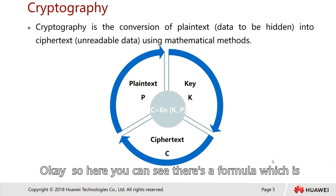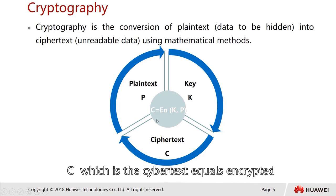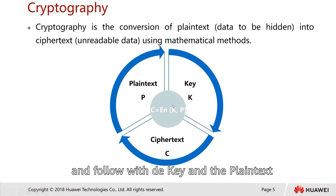Here you can see there's a formula: C, which is the ciphertext, equals encrypted followed by the key and the plaintext.